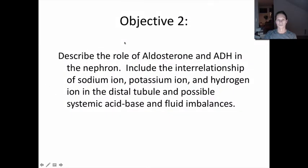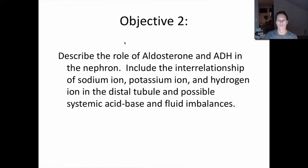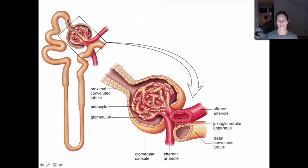Let's quickly talk about aldosterone and antidiuretic hormone — their interrelationship with sodium, potassium, and hydrogen ion in the distal tubule, and acid-base and fluid imbalances. Here's a more anatomically correct picture. You can see the glomerulus, the afferent arteriole, and how the distal tubule wedges in between the afferent and efferent arterioles. That spot between them is called the juxtaglomerular apparatus.